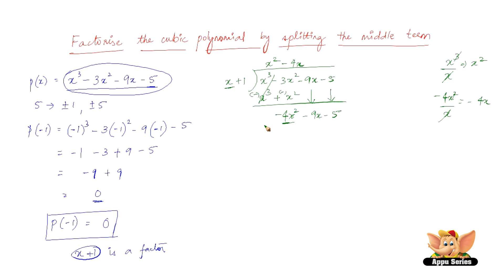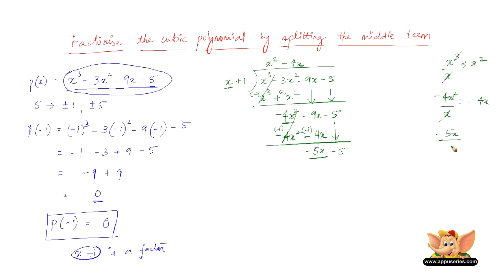Bringing down -9x - 5, the next term of the quotient is -4x² divided by x, which is -4x. Multiplying -4x by the divisor: -4x times x is -4x², and -4x times 1 is -4x. Subtracting, we get -9x minus (-4x), which is -5x. Bringing down -5, we have -5x - 5. Dividing -5x by x gives -5, the third term of the quotient. Multiplying -5 by the divisor gives -5x - 5. Subtracting, we get 0.